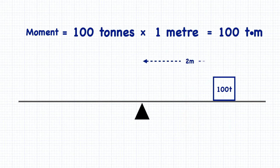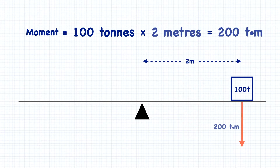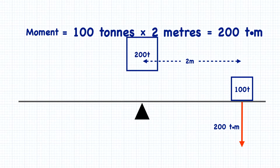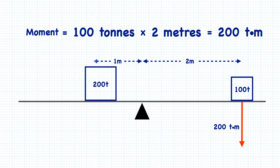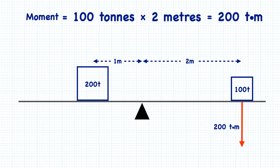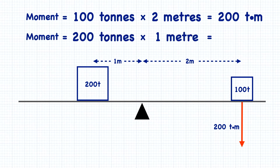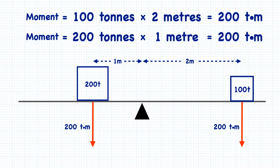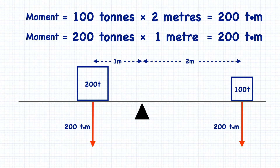Move that same weight to 2 meters from the pivot point and the resulting turning moment is 200 ton-meters. Now if I were to take a 200-ton weight and place it 1 meter away from the pivot point, the force is now 200 tons while the length of the lever is 1 meter, resulting in a turning moment of 200 ton-meters. Even though one weight is twice as heavy as the other, they are both attempting to turn the scale with the same force because of their distance away from the pivot point.